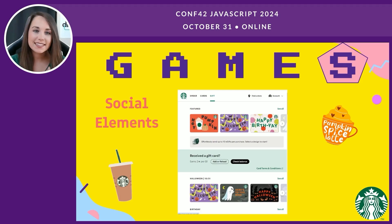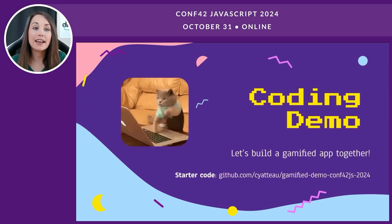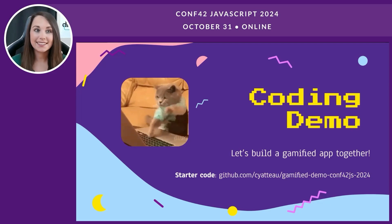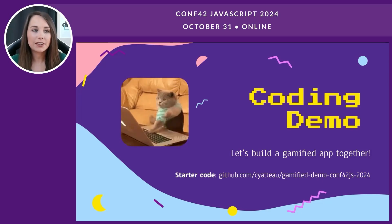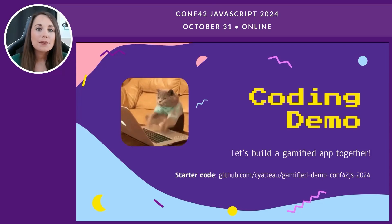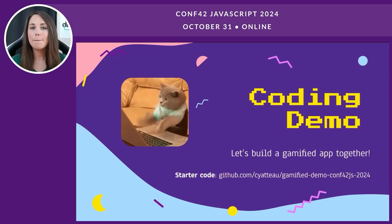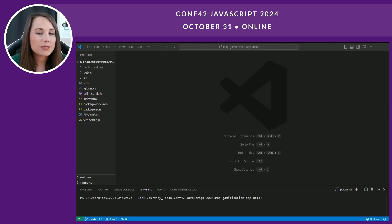Now that we've discussed the theory behind GAMES, here's where we get to the fun part — some coding together. For this coding session, we're going to build a simple app that will evolve into something more engaging with React and gamification techniques. We'll start small and add one feature for each letter in GAMES. By the end, we'll have a fun little gamified app with elements like experience points and social sharing. We're starting with a basic map app built in React, set up using Vite, with default files cleaned up.